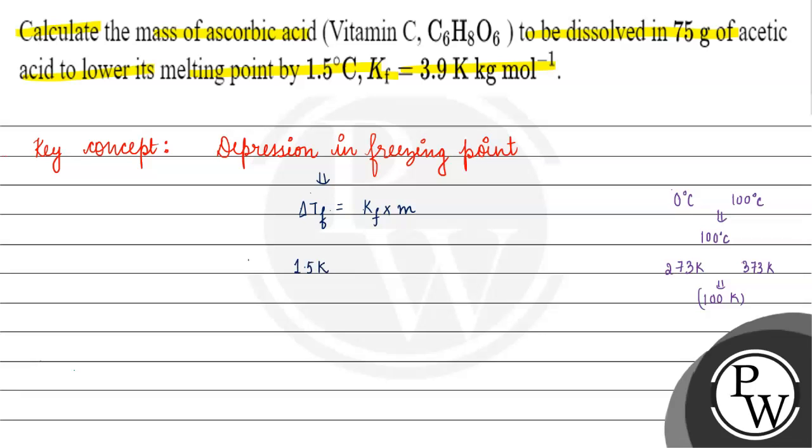We have ΔTf = 1.5 Kelvin, Kf = 3.9 Kelvin kilogram per mole, so molality = 1.5 Kelvin divided by 3.9 Kelvin kilogram per mole.